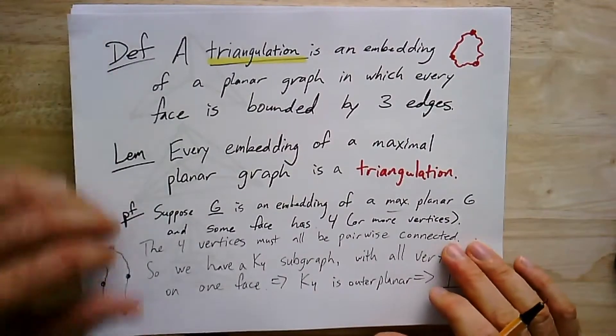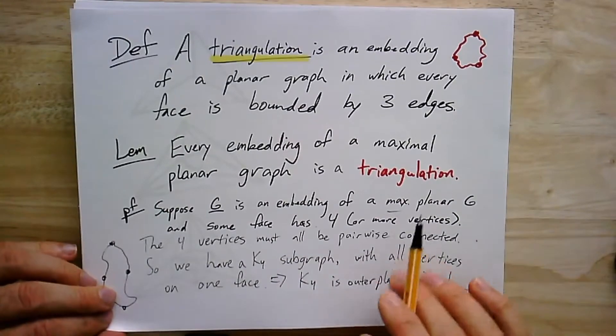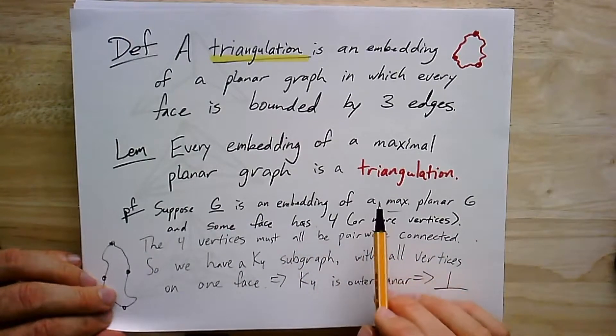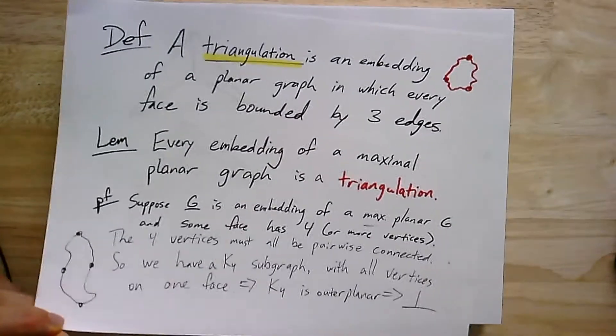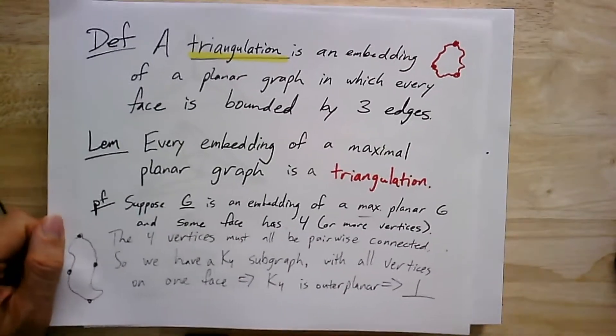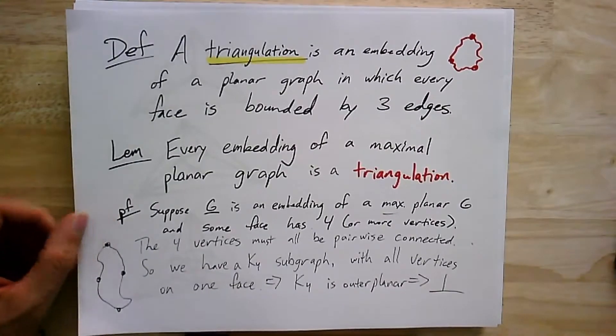So from that we conclude that actually there is going to be no such embedding, and every embedding of a maximal planar graph really has to be a triangulation. And so that gives us this connection between maximal planar graphs and what the faces look like. The faces are all triangles.